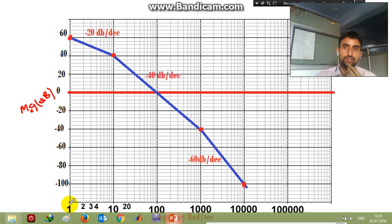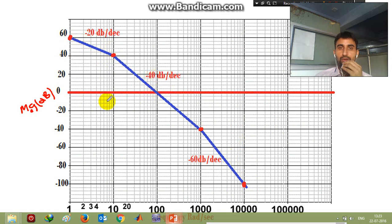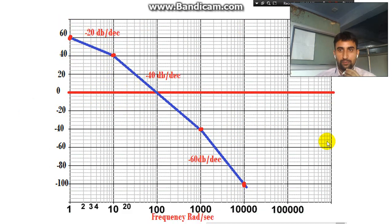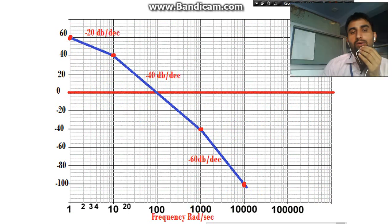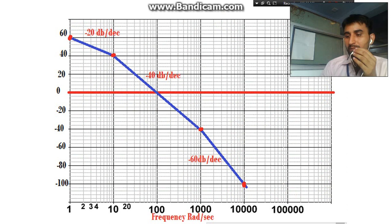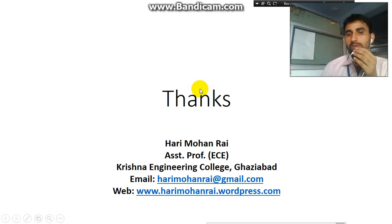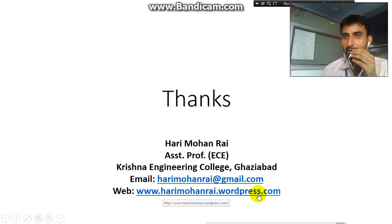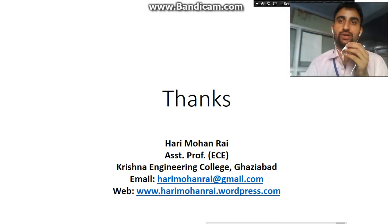At each corner frequency, plot the magnitude you have calculated, use a scale to join the points, and you will have your magnitude plot of the Bode plot. In the next slide we will discuss the phase plot and draw it on the same graph, completing the full Bode plot. Hope you have understood this concept. If you have any queries, you can email me at harimohandai@gmail.com or visit my website harimohandai.wordpress.com. Thanks for watching.